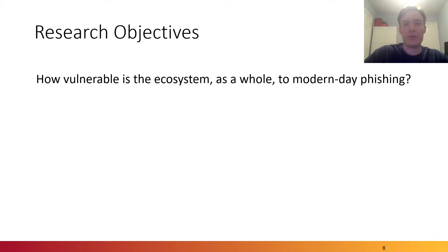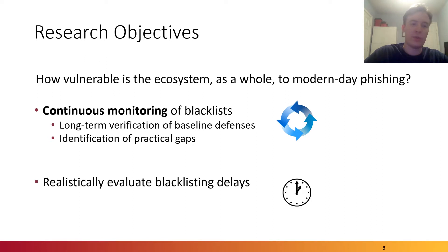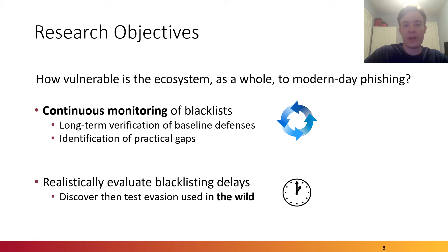Prior research has looked at individual anti-phishing entities and their gaps in blacklisting. However, in this work, we want to look at how vulnerable the ecosystem is as a whole to modern day phishing. We do this by continuously monitoring blacklists to perform long-term verification of baseline defenses and identifying any gaps that might exist. In addition, we want to realistically evaluate blacklisting delays by discovering and testing evasion techniques that real phishing websites use, and simulate ecosystem detection methods against these techniques.